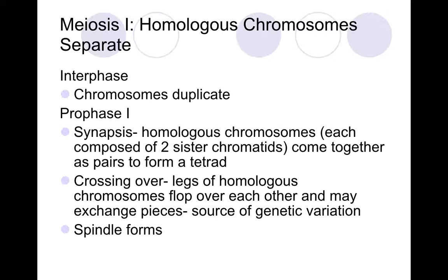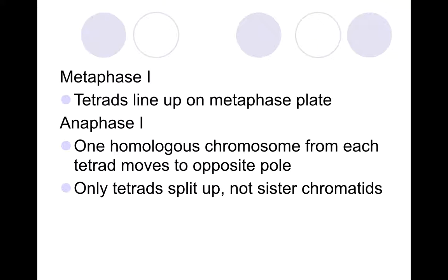In meiosis one, homologous chromosomes will actually separate. During interphase, just like in mitosis, our chromosomes duplicate and then we go into prophase one. In prophase one, spindle fibers form, but two other very important things occur. First, a process called synapsis, where homologous chromosomes — each having two sister chromatids — come together as a pair to form a tetrad of four pieces. The legs of those homologous chromosomes often cross over each other and exchange information — this is our source of genetic variation, called crossing over, and it occurs in prophase one.